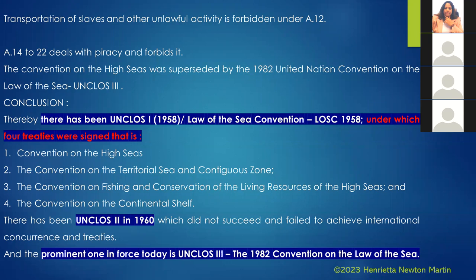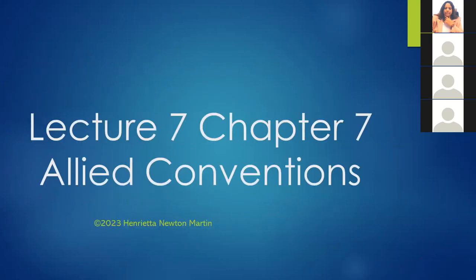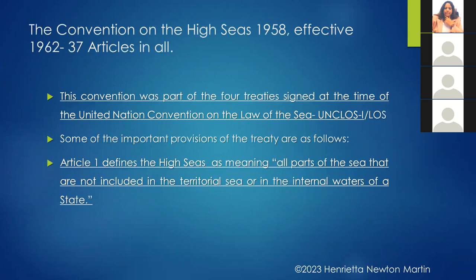Under the Law of the Sea Convention 1958 there are four treaties: the Convention on the High Sea, the Convention on the Territorial Sea and Contiguous Zone, the Convention on Fishing and Conservation of Living Resources of the High Seas, and the Convention on the Continental Shelf. For this class we are going to talk about the Convention on the High Seas, which was signed in 1958 and became effective in 1962. This Convention contains 37 articles in all, and we are going to discuss a few of them.